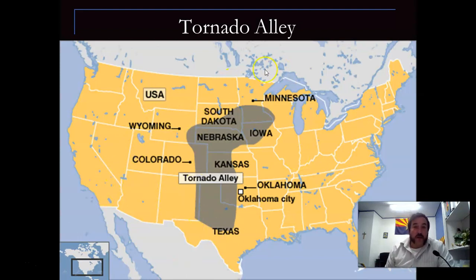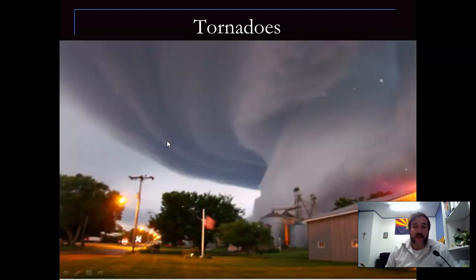Why is this called Tornado Alley in our country? Because we have the warm air coming from here and the cold air coming from here. And when there's extreme warm air and extreme cold air, that's when those super storms, or what we call super cells, form. And again, you add in those swirling winds, and man, it can cause a lot of destruction.